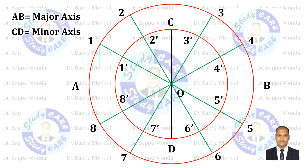Now draw vertical lines from each point of the outer circle, which are parallel to line CD or perpendicular to line AB. Now draw horizontal lines from each point of the inner circle, which are parallel to line AB or perpendicular to line CD.